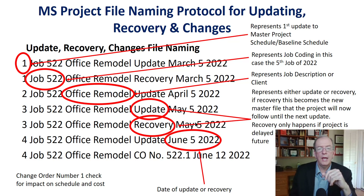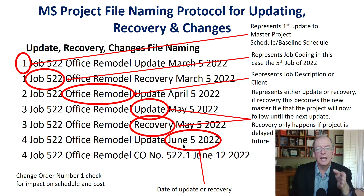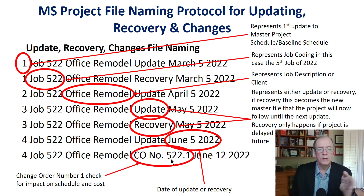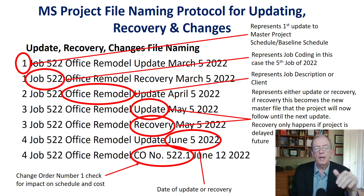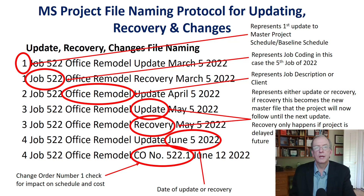The type field identifies whether it's an update, a recovery, a change order, or a narrative. Every file should have a date at the end so you're very clear on when it was updated and what the status date was. For change orders, for example, 'CEO 522.1' would be the first change order of job number 522. The second change order would be '522.2,' and so forth.